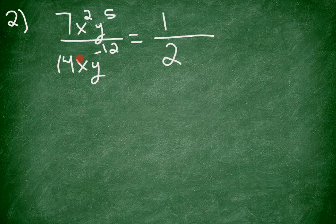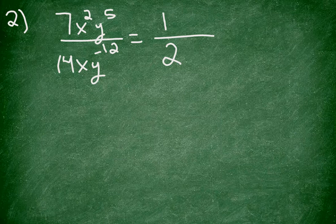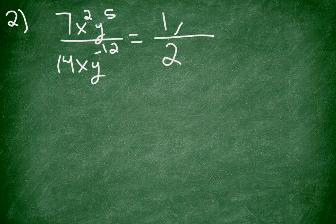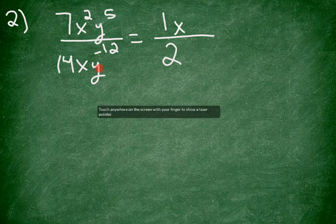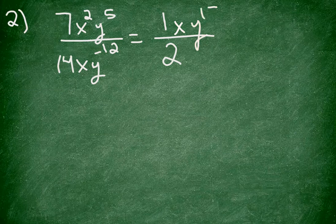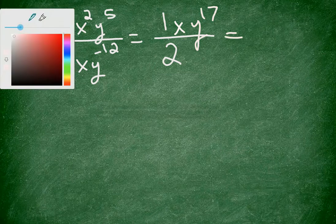First off, seven divided by 14 is one half, so I'm going to put a one half here. And then for the x's, because I'm dividing x's — dividing two things with a base of x — I'm going to subtract these exponents. Now notice here that there's no exponent, but secretly there's an exponent of one. So for the x's, two minus one would result in x to the power of one. And for the y, same thing. We have like bases of y, so I'm going to subtract the exponents because I'm dividing. So five minus negative 12 — be careful with that, it's a double negative — five minus negative 12 is y to the 17th. We don't necessarily have to write the exponent of one; it's understood that there's a leading coefficient of one there, so we can write it as follows.